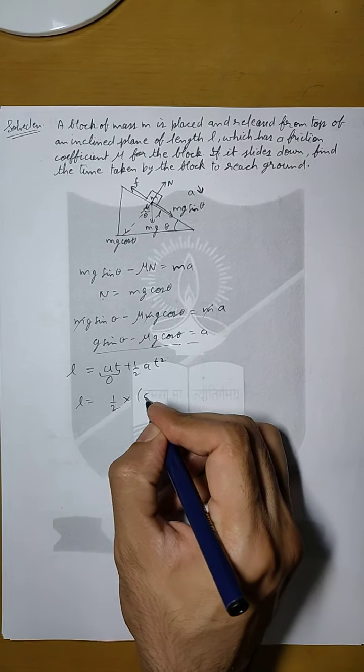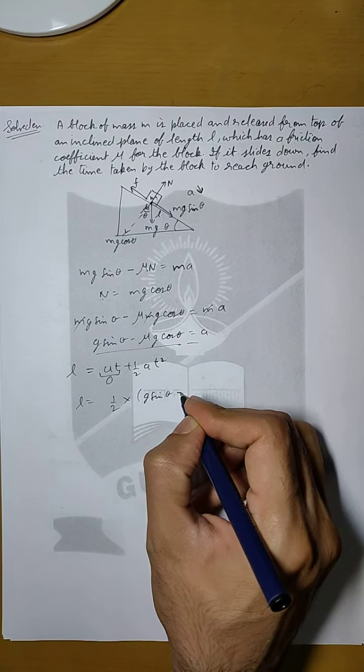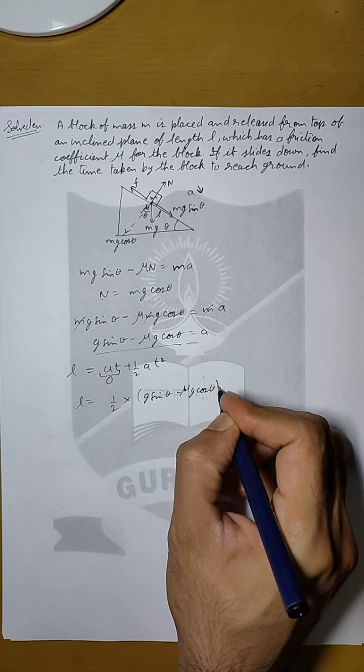A is this. So we will put g sin theta minus mu g cos theta in place of A.